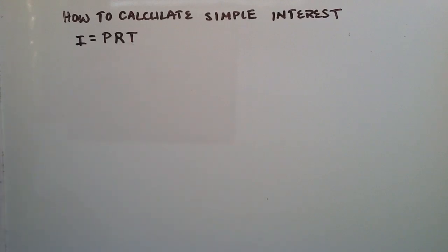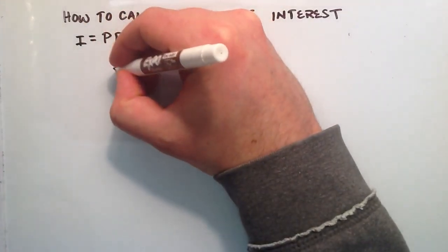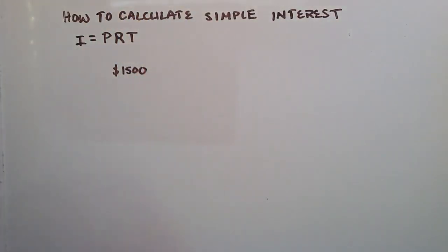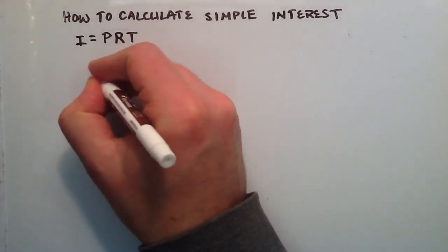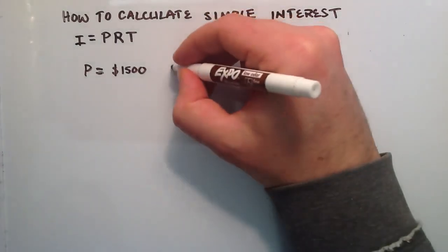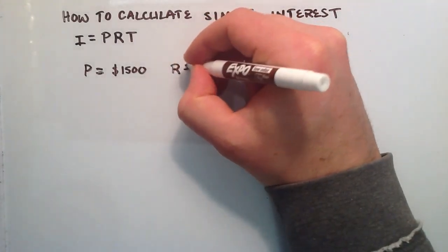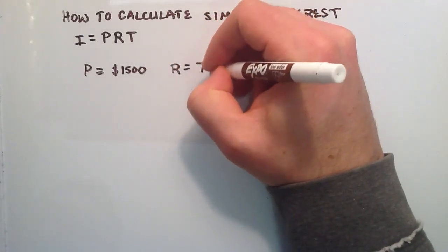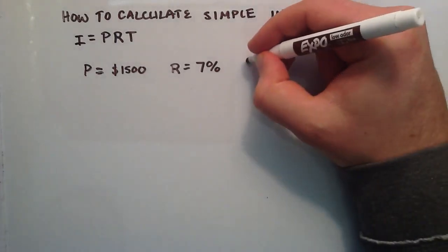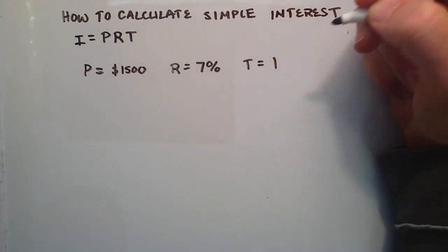For a simple example here, we're going to start out with $1,500. So we're going to invest this money. This would be our principal, the money we start with. And we're going to invest it at a return rate of, let's just say, 7%. And then, to make it simple, we're just going to do a time of one year.